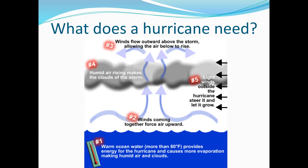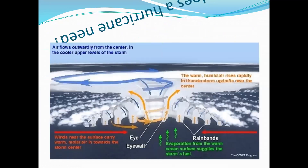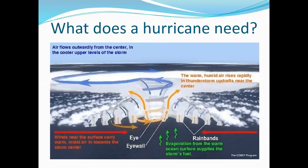Number three, at the top, those winds are going to flow outward, allowing the air below it to rise. Number four, the humid air rising is making the clouds. And number five, the light winds outside steer that hurricane and help it to grow. This is just another graphic of what a hurricane needs.